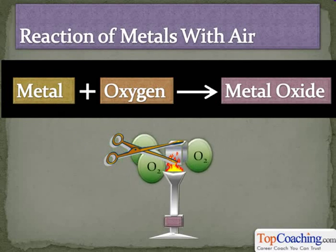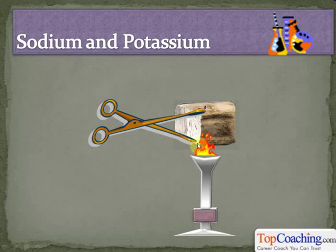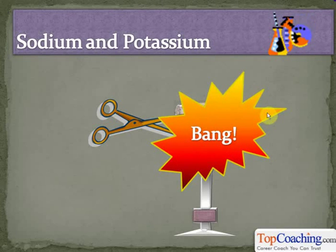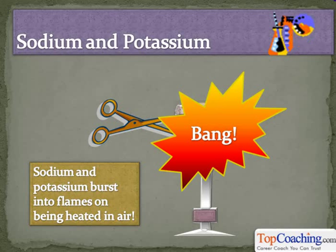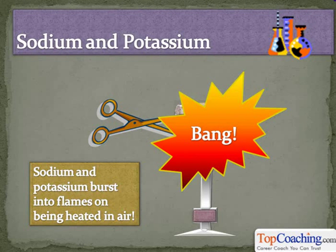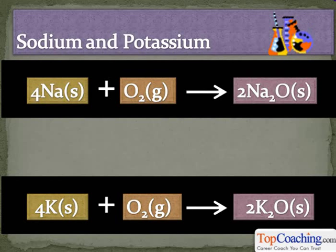Let's look at sodium and potassium. In the figure you're seeing on your screen, this metal block is a block of sodium. Sodium explodes with a bang when it is made to react with oxygen. Sodium and potassium both burst into flames when they are heated in air, because they are so extremely reactive. They form oxides by reacting almost explosively in air. In fact, sodium and potassium samples can react even at room temperature with oxygen, so they don't even have to be heated.